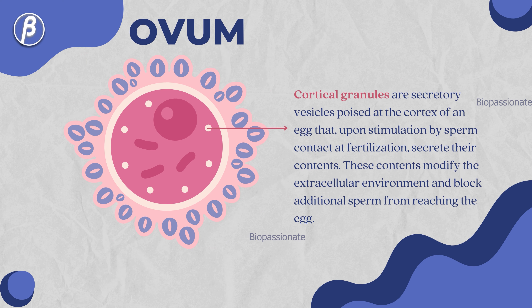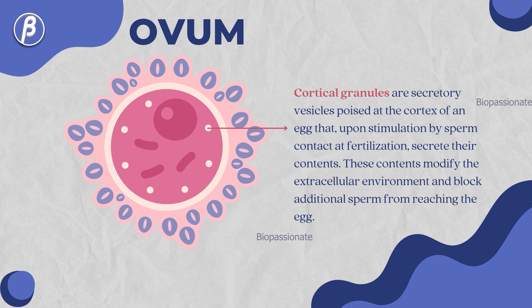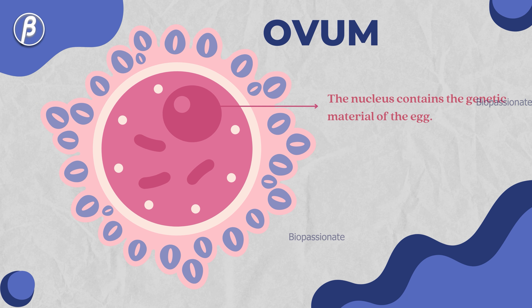Cortical granules are secretory vesicles poised at the cortex of an egg that, upon stimulation by sperm contact at fertilization, secrete their contents. The nucleus contains the genetic material of the egg.